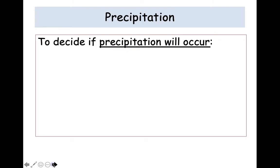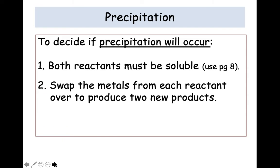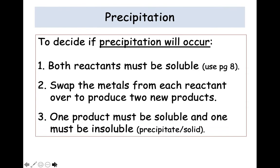Now to decide if precipitation will occur without the chemicals in front of you, you can do this from the names. So there's some criteria it needs to meet. So both reactants must be soluble, so check page 8. You then want to swap the metals in the reactant names over to produce two new products. And final step then once you've got two new products, one must be soluble and one must be insoluble. The insoluble one would be your solid.